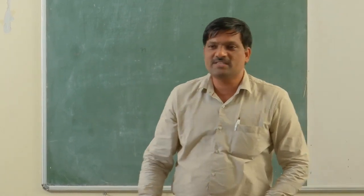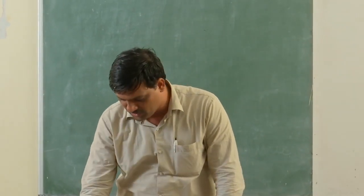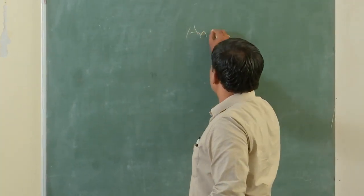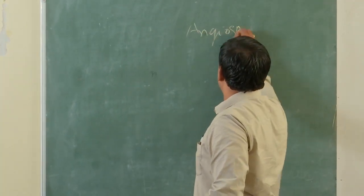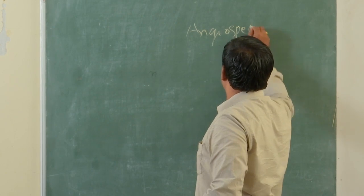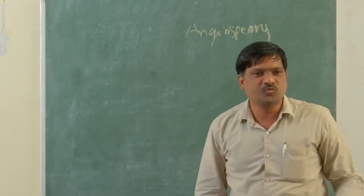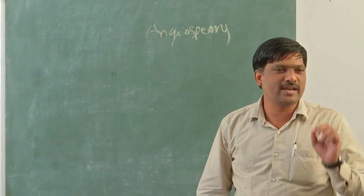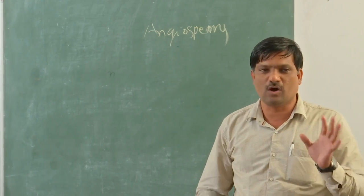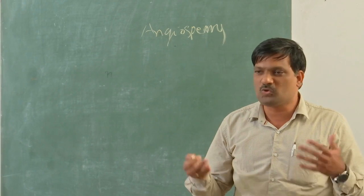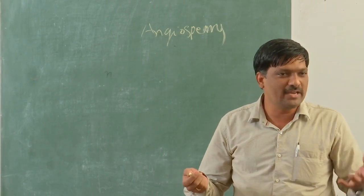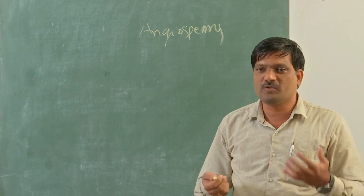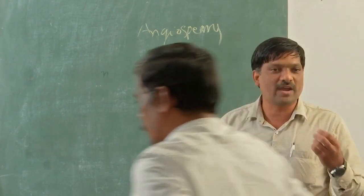Today our topic is flowering plants, or angiosperms. Angiosperms always produce flowers and they give fruits and seeds. There are two lakh fifty thousand angiosperm species in the world, and out of those, India has very good biodiversity with eighteen thousand five hundred species.